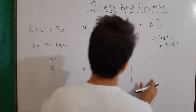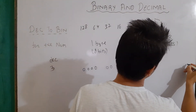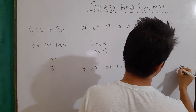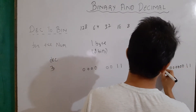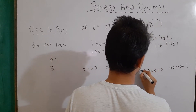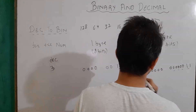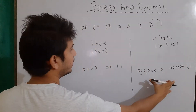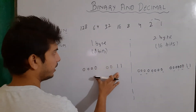Now for 16-bit, we will use 16 bits. We write 1 1 at the right end and then 14 zeros. So this is the 16-bit equivalent for decimal 3, and the previous was the 8-bit equivalent.